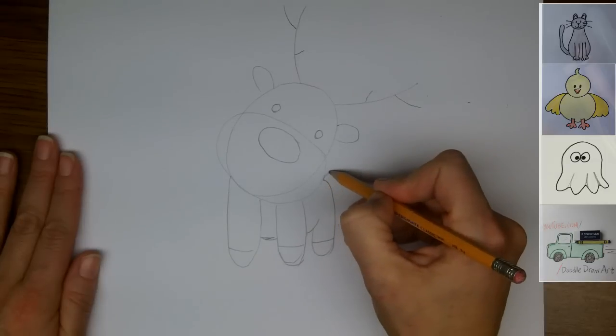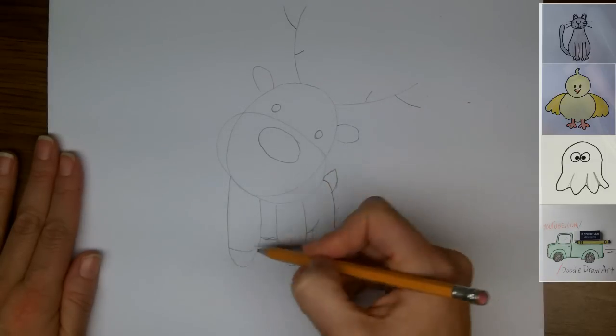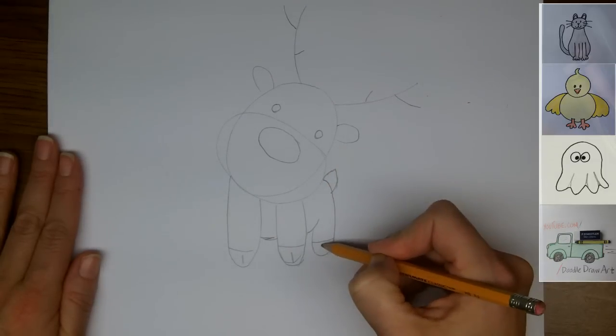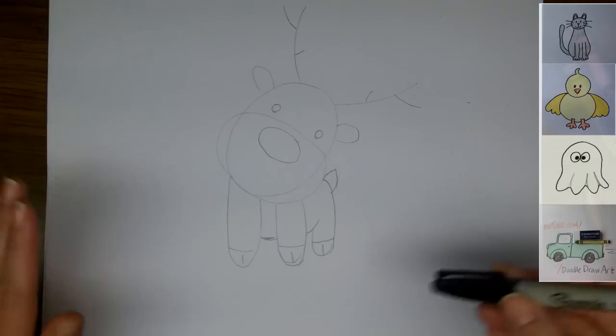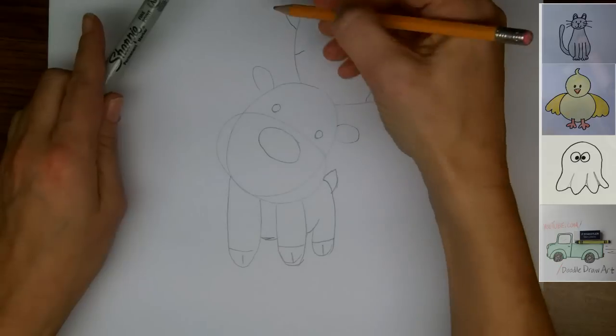And then he just has a little tail peeking out back here. And then we'll draw straight lines going down to show where his hoofs divide. Okay.